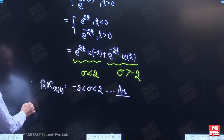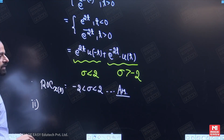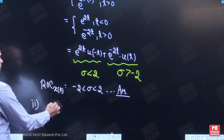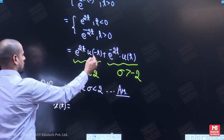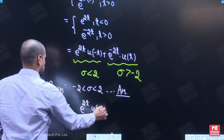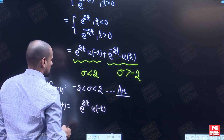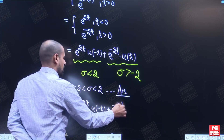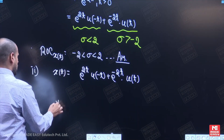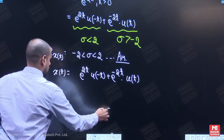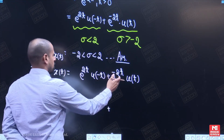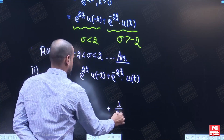Now let us proceed for the second part. In the second part, we have to write down the Laplace transform of the signal. We have simplified signal x(t) as e to the power 2t into u(minus t) plus e to the power minus 2t into u(t). We will write down the Laplace of the second term first. For the second term, the Laplace is 1 upon s plus 2.